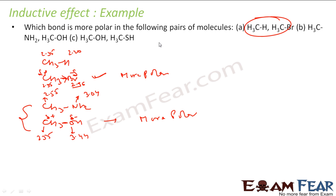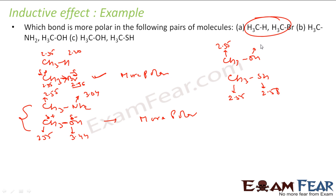Now the same thing with CH3OH and CH3SH. For sulfur, the electronegativity is 2.58, carbon is 2.55, and oxygen is 3.44. The difference between carbon and oxygen is much larger — almost 0.9 — whereas between carbon and sulfur it is only 0.03, very very small. So CH3OH is more polar and CH3SH is less polar.